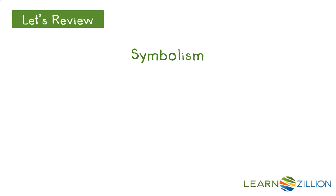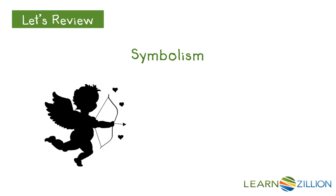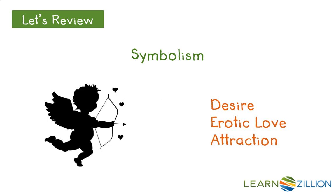Symbolism refers to the practice of using objects to represent ideas. One example of a well-recognized symbol in our culture is the figure of Cupid. In classical mythology he was the god of desire, erotic love, and attraction. His bow and arrows represent the source of his power. A person shot by Cupid's arrow is filled with uncontrollable desire. Today he symbolizes love, and we run into many different representations of him around Valentine's Day.